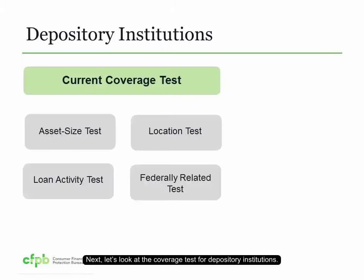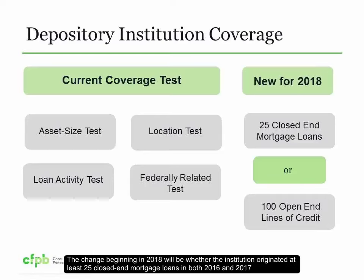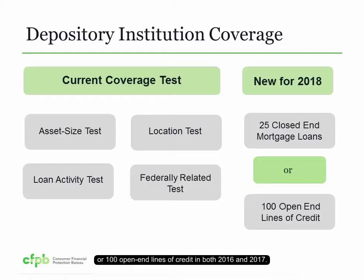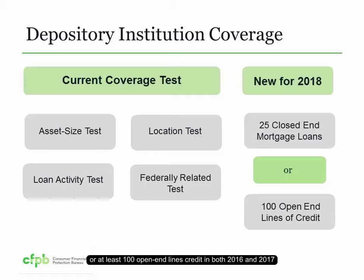Next, let's look at the coverage tests for depository institutions. The asset size tests, location tests, loan activity tests, and federally related tests are the same as those for 2017. The change beginning in 2018 will be whether the institution originated at least 25 closed-end mortgage loans in both 2016 and 2017, or 100 open-end lines of credit in both 2016 and 2017. Similar to non-depository institutions, a depository institution would only need to originate either at least 25 closed-end loans or at least 100 open-end lines of credit in both years to meet this requirement.